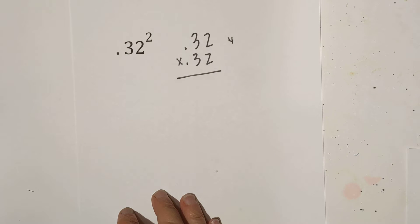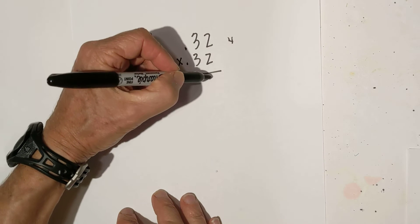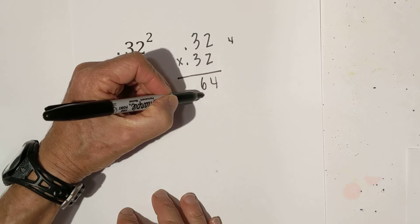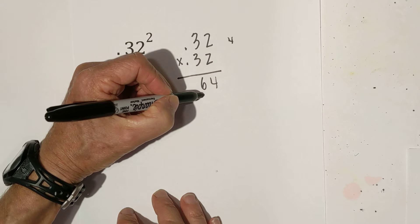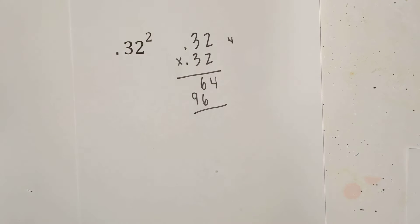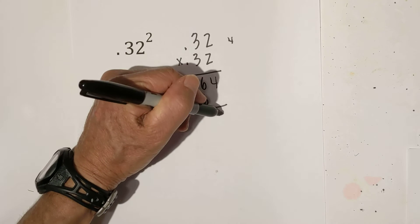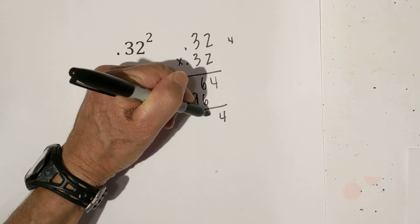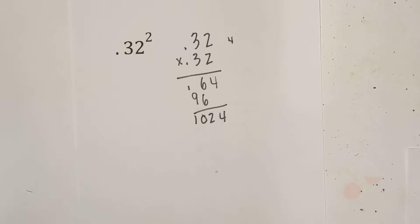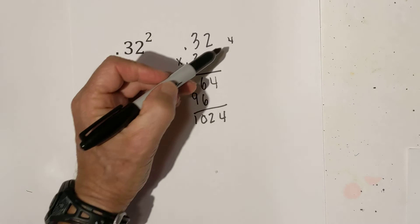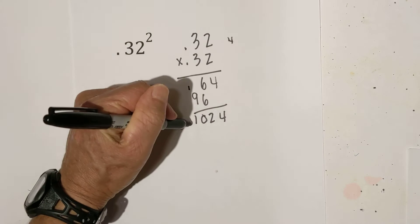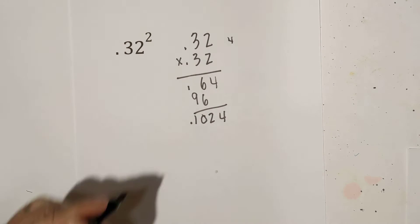We now just multiply straight across. That is four, six, six, nine. Bring down four. That's twelve, one. Now remember we need four to the right of the decimal. So we have one, two, three, four. So there we go.